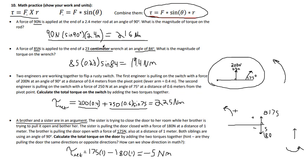Negative five Newton-meters means the sister is winning this battle — the net torque is in the clockwise direction because we defined clockwise as negative. You show direction with positive and negative torque just like you would with force.